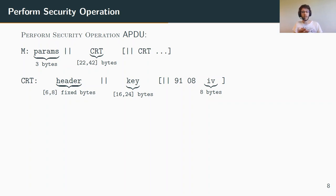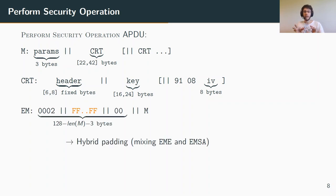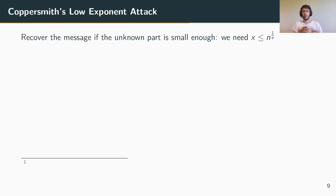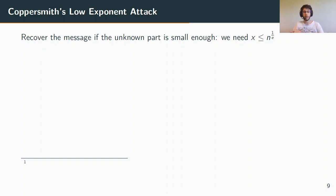The padding described in the specification, instead of using a random byte string as in classical PKCS#1 v1.5 padding for encryption, uses a fixed byte string with only 0xFF bytes. This leaves very few unknown bytes compared to the modulus size. This leads us back to 1997 with the Coppersmith attack, which allows an attacker to recover the message if the unknown part is small enough — specifically, if the unknown part is less than or equal to n^(1/e), where n and e are the public key parameters.